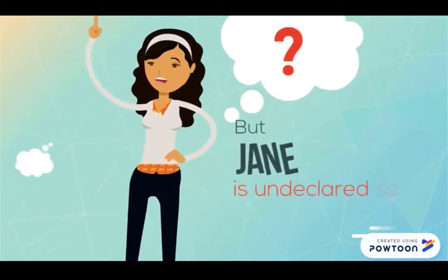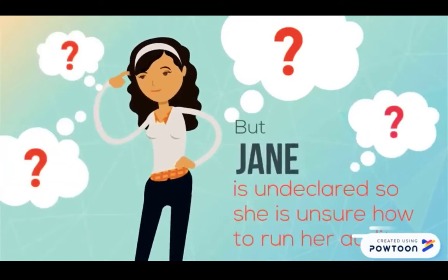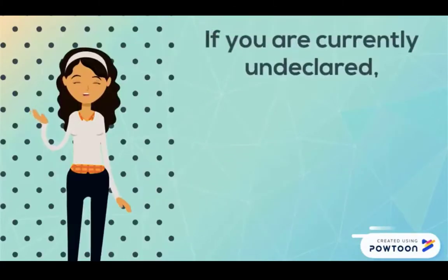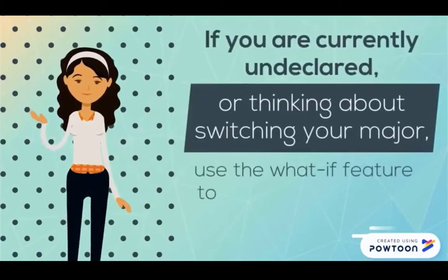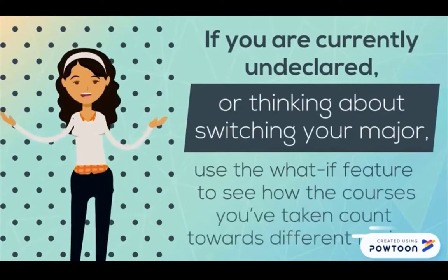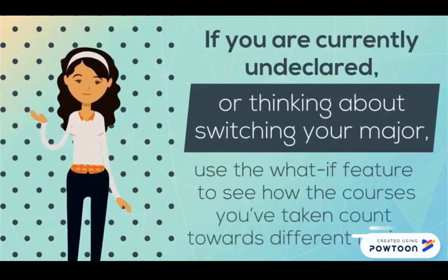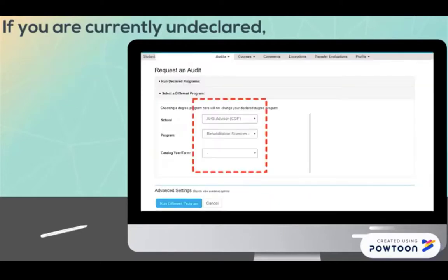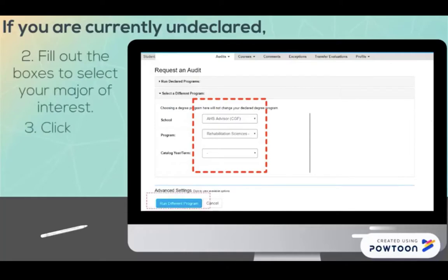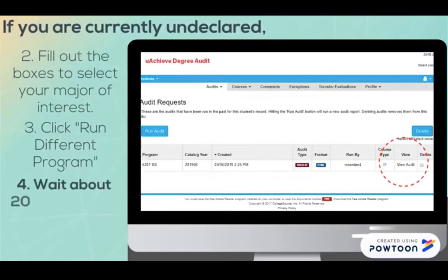But Jane is undeclared, so she is unsure how to run her audit. If you are currently undeclared or thinking about switching your major, use the What If feature to see how the courses you've taken count towards different majors. Click Select a Different Program, fill out the boxes to select your major of interest, click Run Different Program, wait about 20 seconds, and then click View Audit.